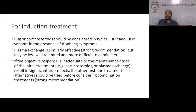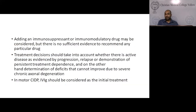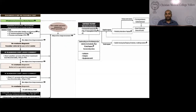In summary for induction treatment: IVIG and corticosteroids should be considered for typical CIDP or CIDP variants with disabling symptoms. Plasma exchange is also effective but less well tolerated. If objective response is inadequate or significant side effects occur, consider shifting to another agent. For maintenance treatment, if the first-line treatment is effective, continue the same agent. Subcutaneous IVIG or IVIG can be considered for maintenance in IVIG-responsive patients. In our practice, we usually add an immunosuppressant — either azathioprine or mycophenolate. Motor CIDP patients should avoid corticosteroids.